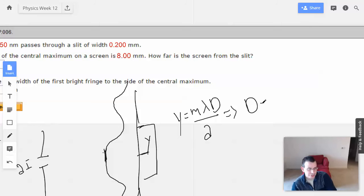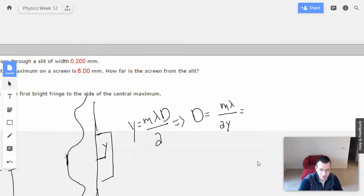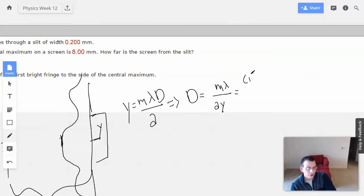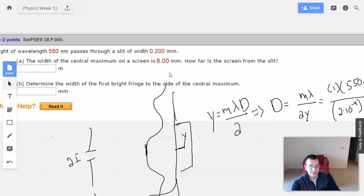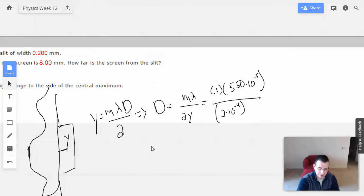It implies that the mystery distance D is m lambda over a times y. There we go. 1 times 550 times 10 to the negative 9th. Aperture, 2 times 10 to the negative 4th. And then 8, which I'm going to double. Wait a second, no. The width of the central maximum is 8, so it means the distance to the first minimum will be half that. So it'll be 4, 4 times 10 to the negative 3rd. There we go. Now we're doing better.